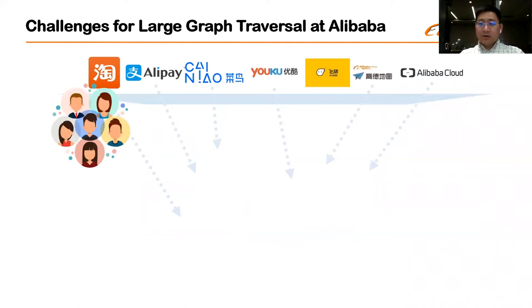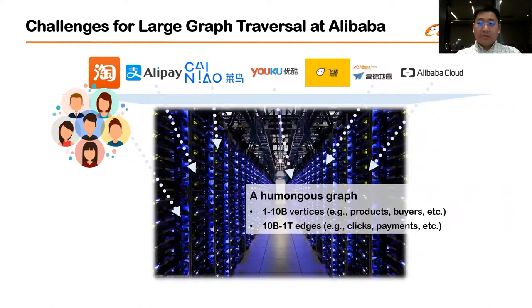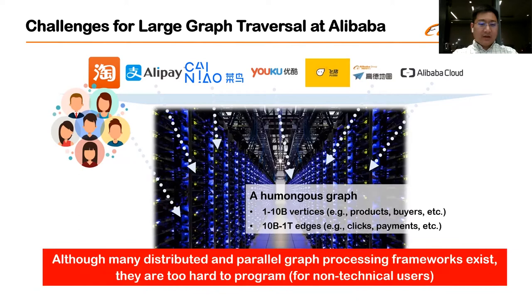Our work is motivated by real requirements from Alibaba. It is very common for domain experts, typically non-technical users, to directly interact with graph data to locate specifically in-depth information for a particular task. On the other hand, many business-critical applications rely on a humongous graph consisting of hundreds of billions or even trillions of edges. This scale far exceeds the capabilities of individual machines. Although there are many distributed parallel graph processing frameworks, they are too hard to program, especially for our targeted non-technical users.